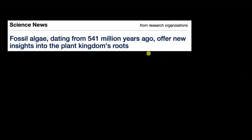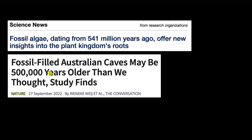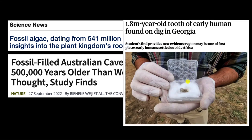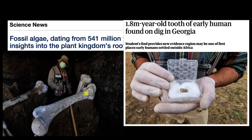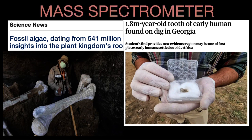We often come across articles with titles like: some researchers find algae that is 541 million years old, or a cave with fossils 500,000 years older than we thought, or a fossil in the form of a million-year-old tooth. How do scientists and researchers figure out the age of all these fossils? When experts examine fossils, they use a technique that involves counting radioactive — or unstable — atoms of certain elements still present in a sample, using an instrument called a mass spectrometer. The goal of this video is to figure out how a mass spectrometer works and how it helps in determining the age of a fossil.